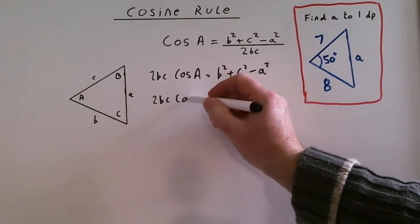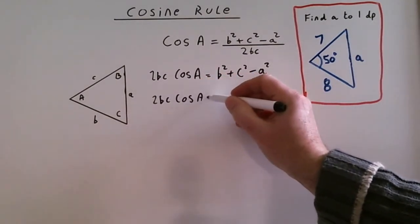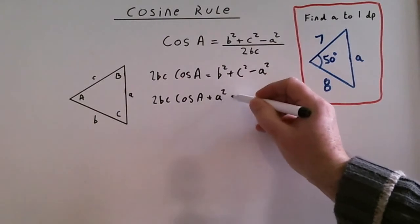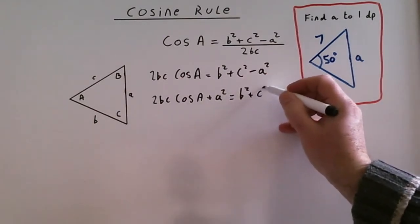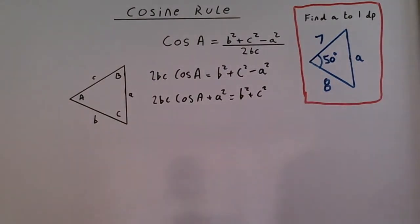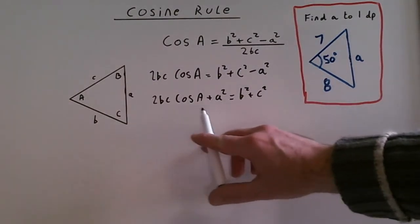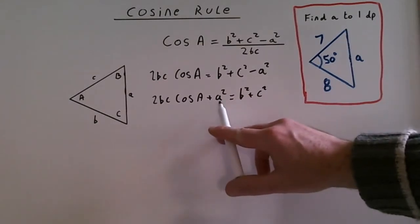2bc cos A plus a squared equals b squared plus c squared. Nearly there. Now if you look at this, 2bc cos A is adding itself to a squared.